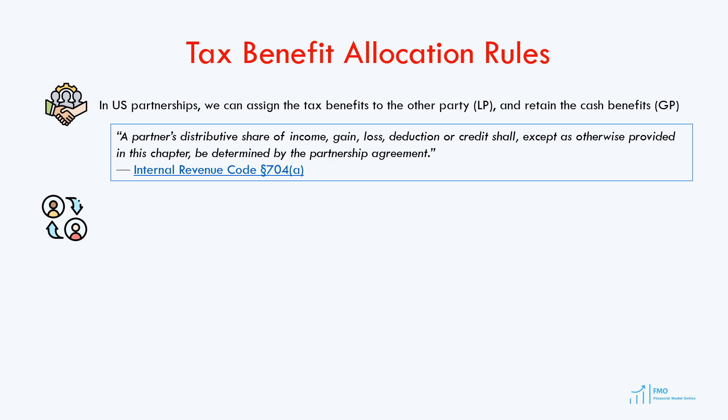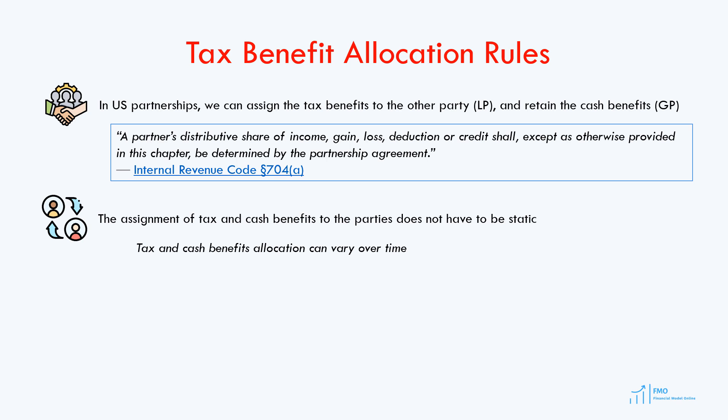The allocation of cash and tax benefits between the parties does not have to be static. We can have a certain allocation in the early stage of the project and a different allocation when the project becomes profitable — so the allocation of benefits can vary over time. Furthermore, this allocation does not have to be proportional to the equity investments made by the parties. For example, a party may invest only 10% of the required capital but receive 90% of the cash flow from the partnership, as long as this is agreed to in the partnership agreement.